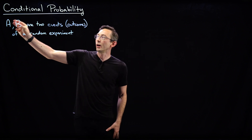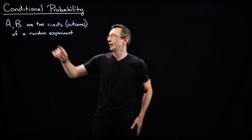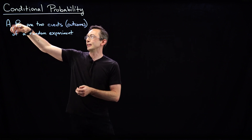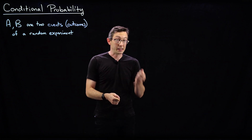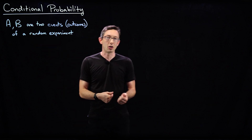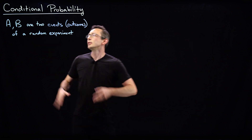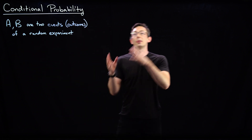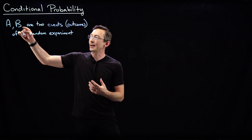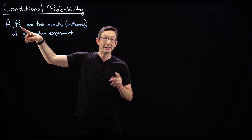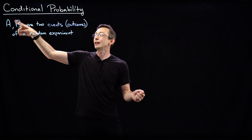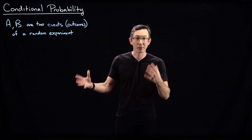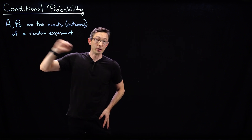The idea is: what if I have two different events? Maybe event A is that my next card is a spade, and maybe event B is that my next card is a 3. We know how to compute the probability of A and B individually, but how do I take partial information? If I know that event B happened — my card is a 3 — does that change my probability of event A? Can I update or refine my probability of A given that I know some information about event B?